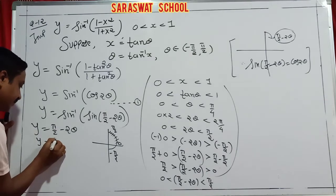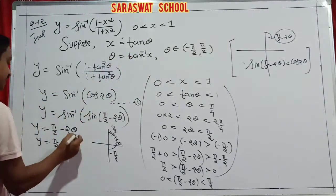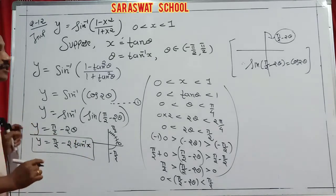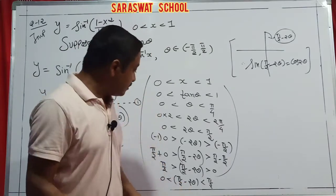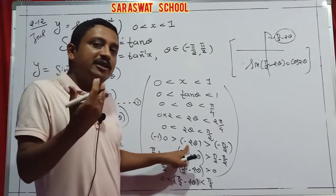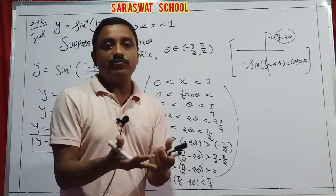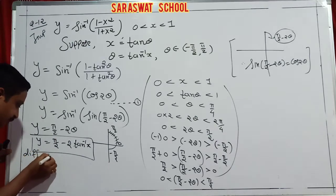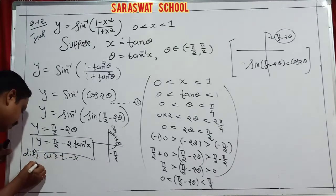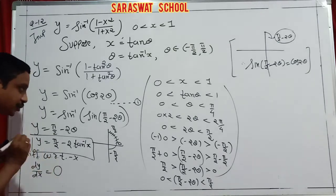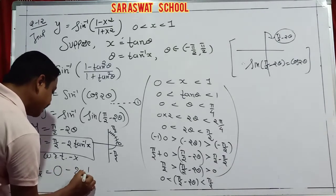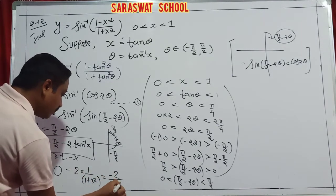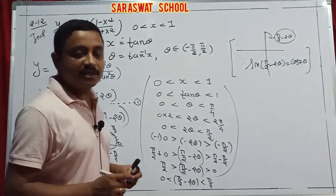Putting the value of θ = tan⁻¹x: y = π/2 - 2tan⁻¹x. Now differentiation with respect to x: dy/dx = 0 - 2·(1/(1+x²)) = -2/(1+x²). That is the answer. This numerical is happily done.